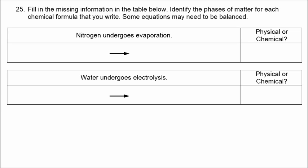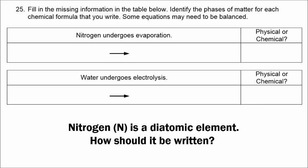In this first example, nitrogen undergoes evaporation. Nitrogen is a diatomic element, so how should it be written? If it's diatomic, it should be written as N2.